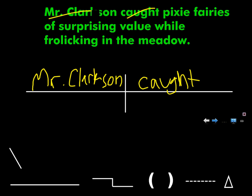Pixie is a noun. 'Pixie-ish' is an adjective — and yes, I've actually heard that word several times. So what you should do, Ben, is diagram 'pixie fairies' as one unit. It's a compound noun, so place it together. Don't separate 'pixie' and 'fairies.'